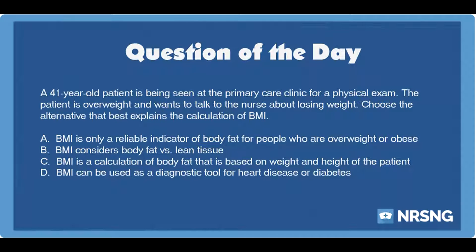The correct answer is C. BMI is a calculation of body fat that is based on weight and height of the patient. BMI is a measure of body fat calculated based on weight and height. BMI does not measure body fat directly. The BMI result classifies the patient according to weight type: underweight, normal weight, overweight, or obese.